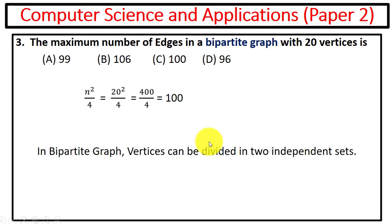Next question is the maximum number of edges in a bipartite graph with 20 vertices. So in this type of graph, you know vertices can be divided into two independent sets. For this you can use this trick: n squared divided by 4. Value for n is 20, 20 squared that is 400 divided by 4 is 100, so answer is C.